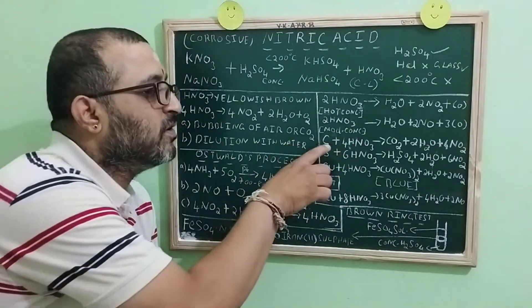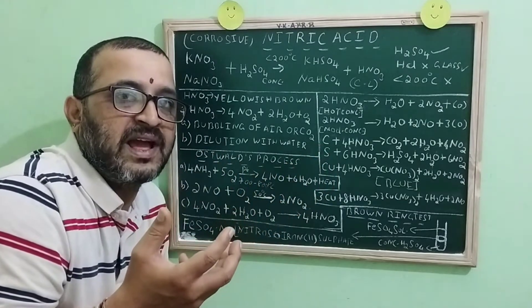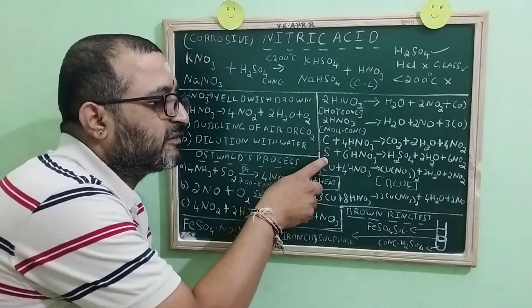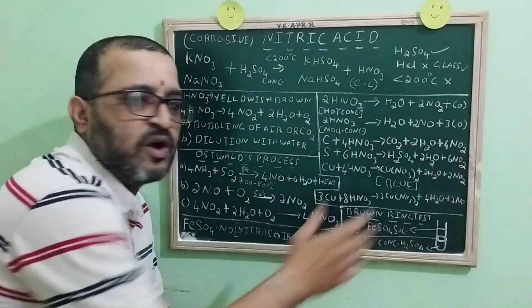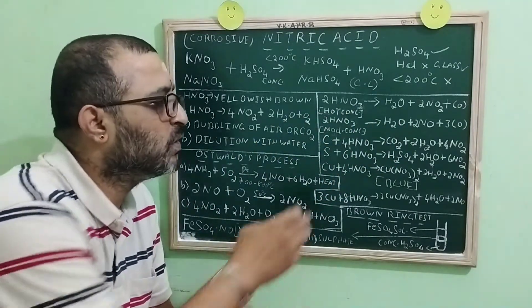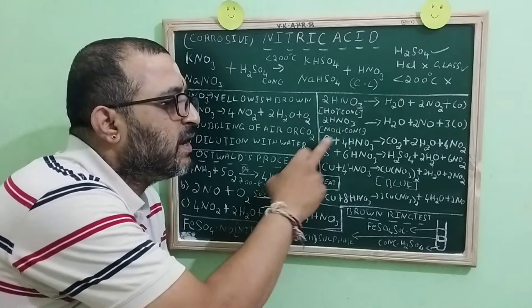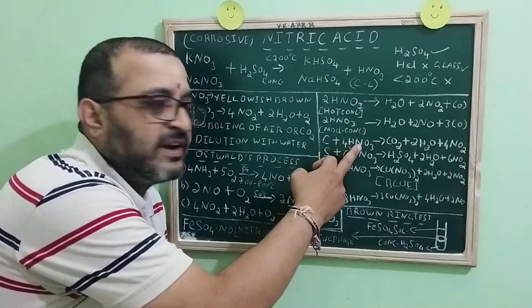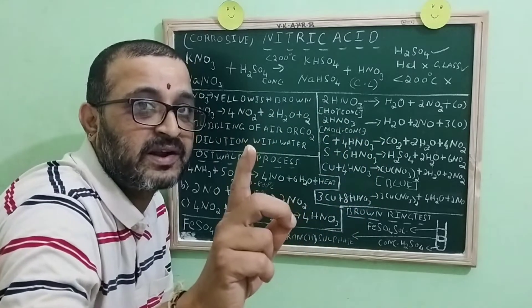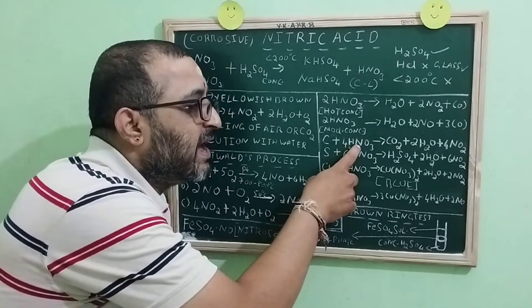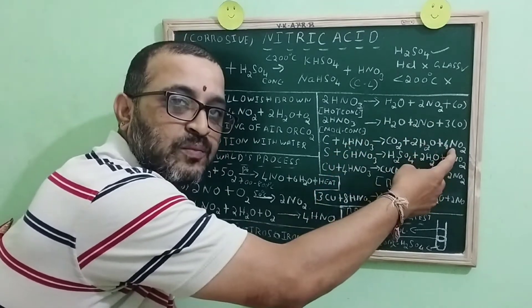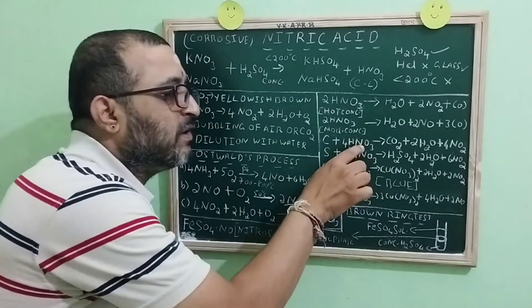Now the oxidizing property of nitric acid. We have taken carbon and sulfur. This is a redox reaction, which involves oxidation as well as reduction. Carbon with nitric acid gets oxidized to carbon dioxide. So carbon dioxide is the oxidized product. Then nitric acid is getting converted to NO2. That is, the reduced product is NO2.